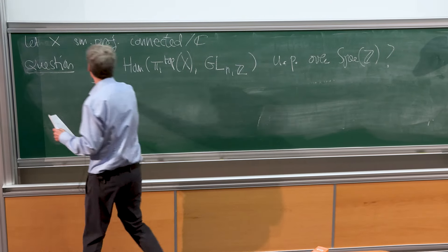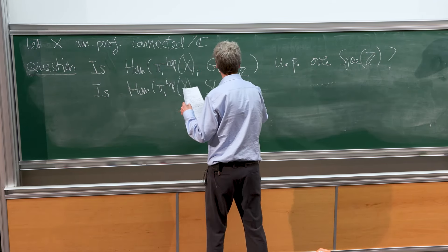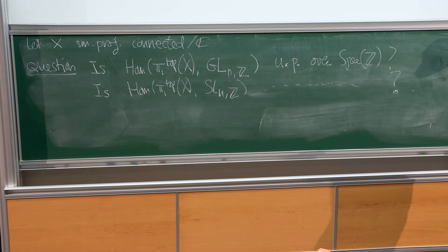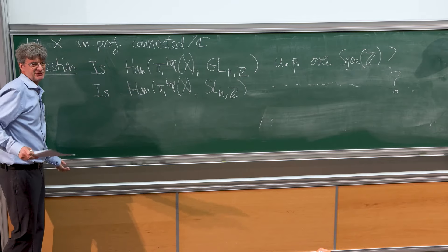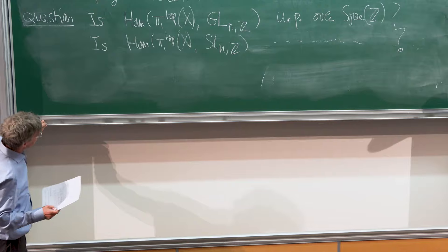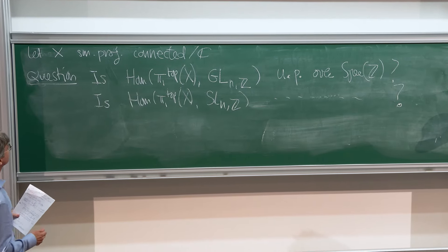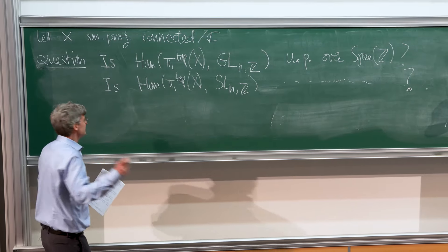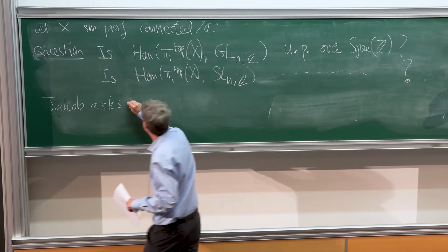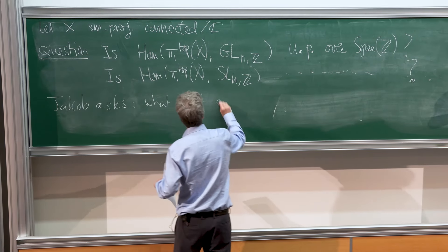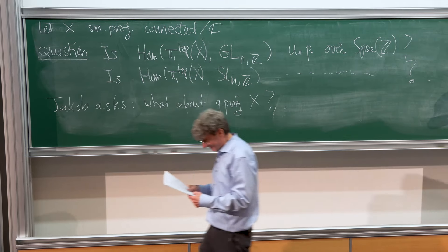The question I want to ask - very far from what we can prove - that I asked Alain in an email: this is not a conjecture. Let X be smooth projective connected over the complex numbers. Is maybe this Hom space from pi 1 of X to GLN, or maybe SLN, universally pure over spec Z? It's already outrageous to ask this.